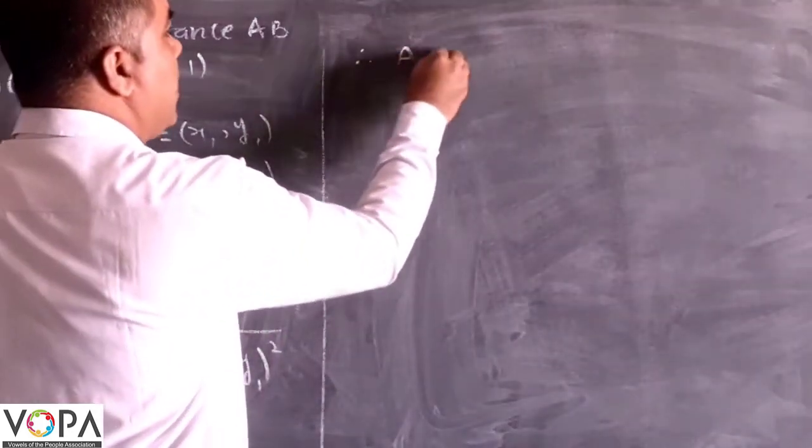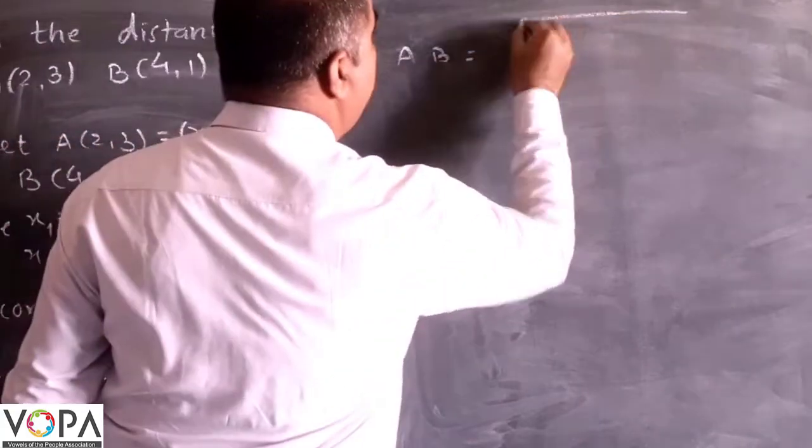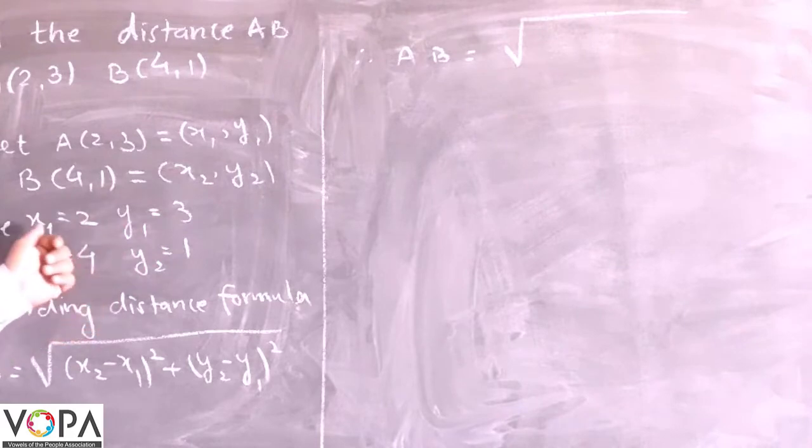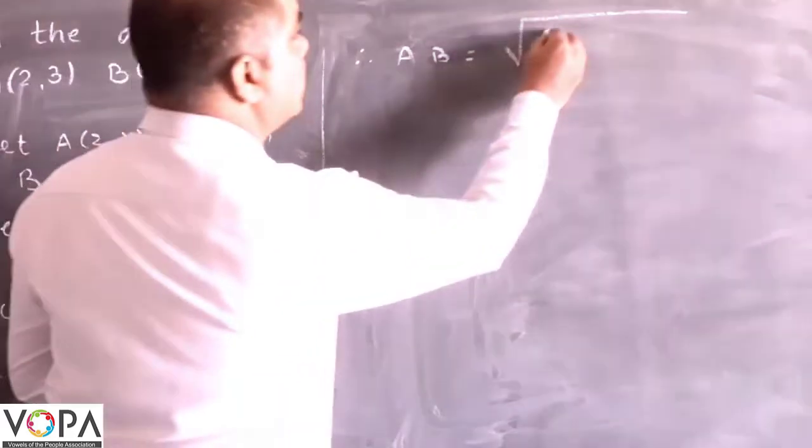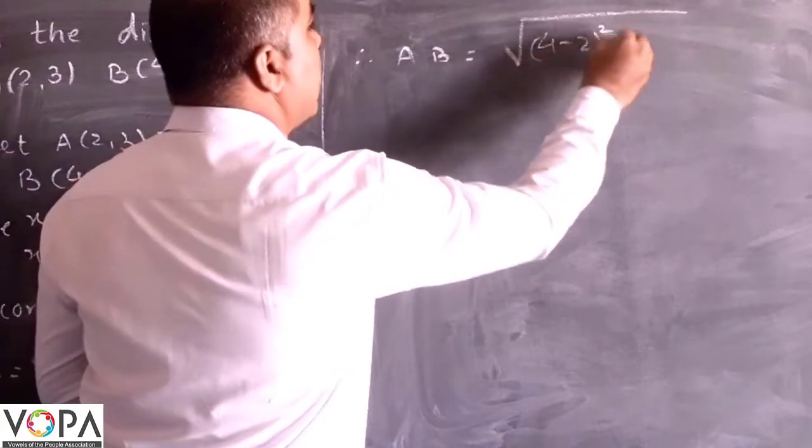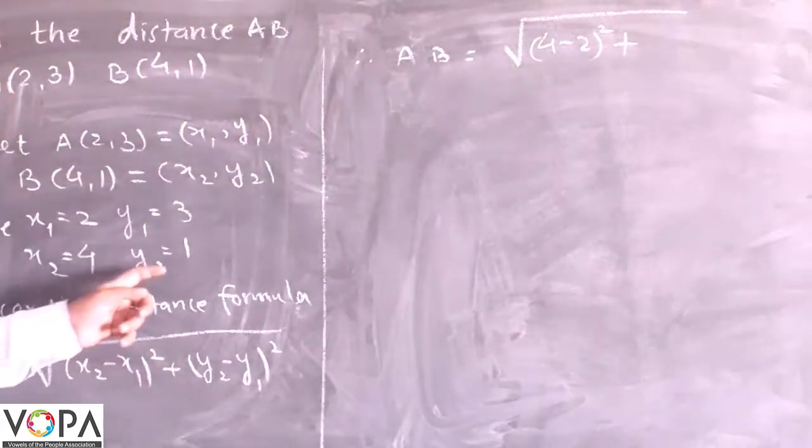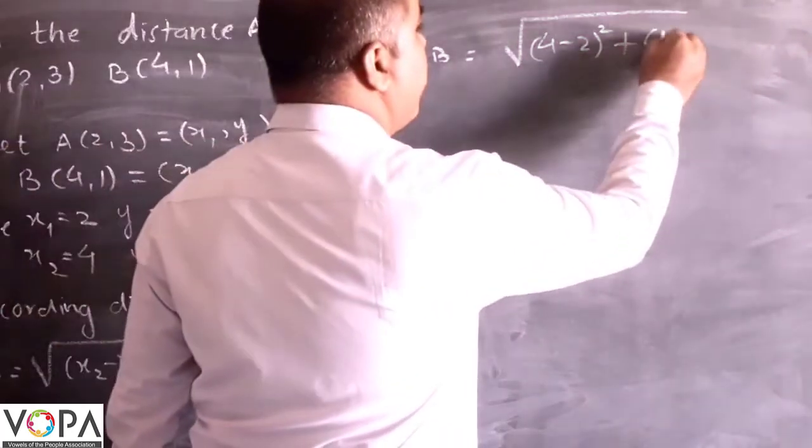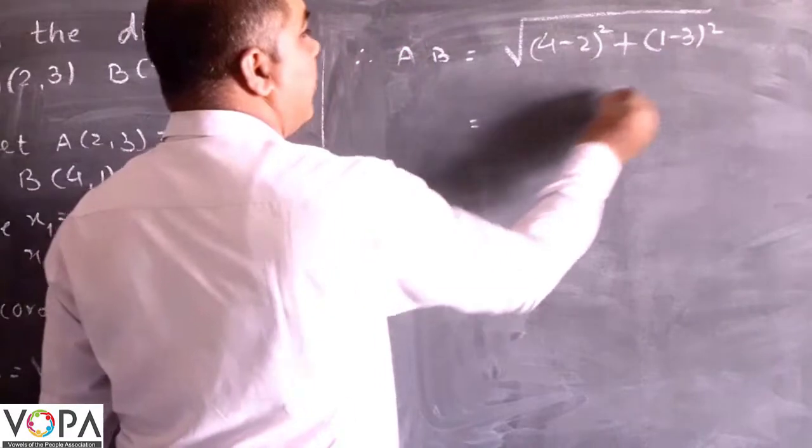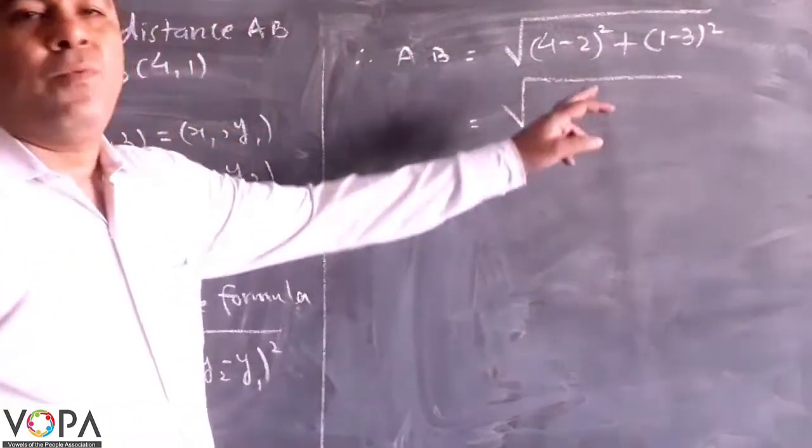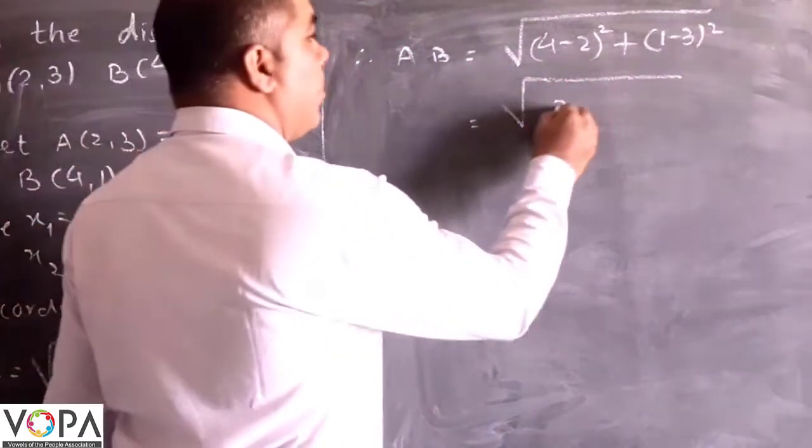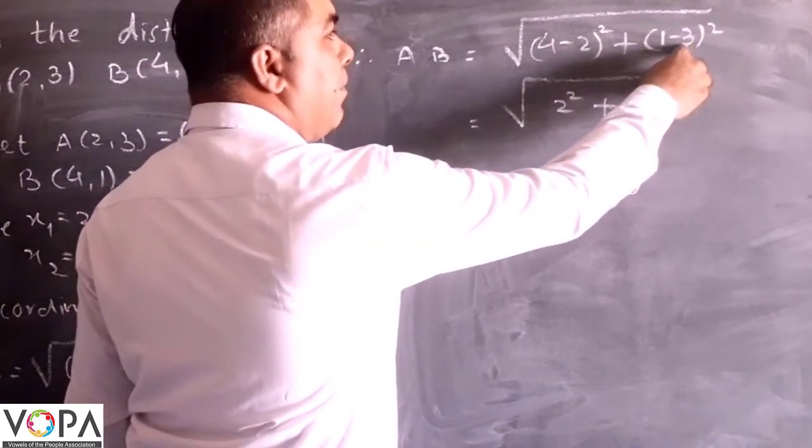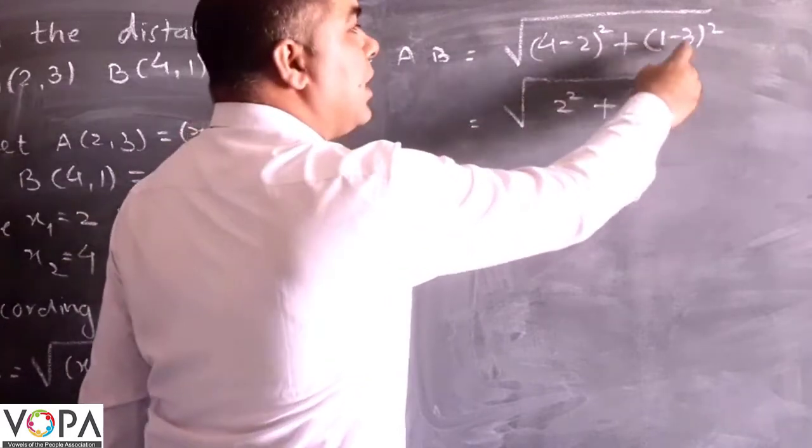Therefore AB equals to square root of (4 minus 2) squared plus (1 minus 3) squared. It will give 4 minus 2, that's 2 squared, plus here 3 is greater but it has a negative sign, the answer will be minus 2 bracket squared.